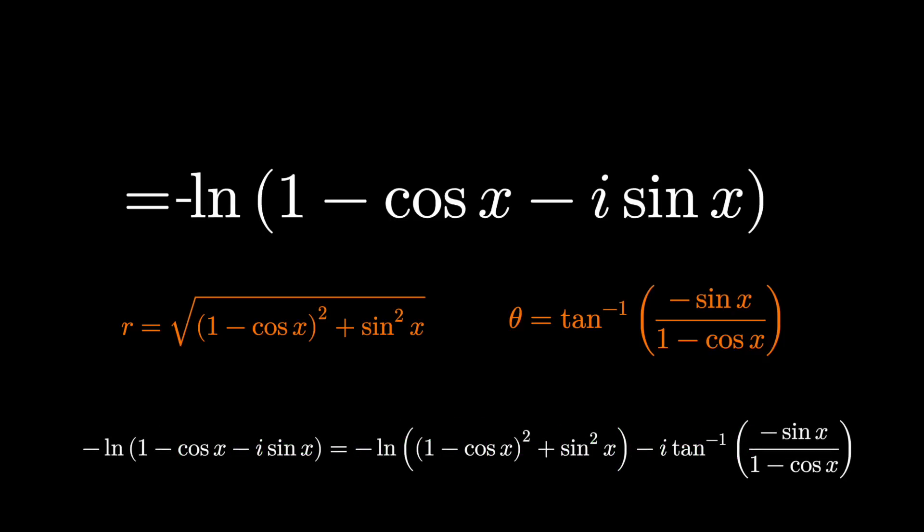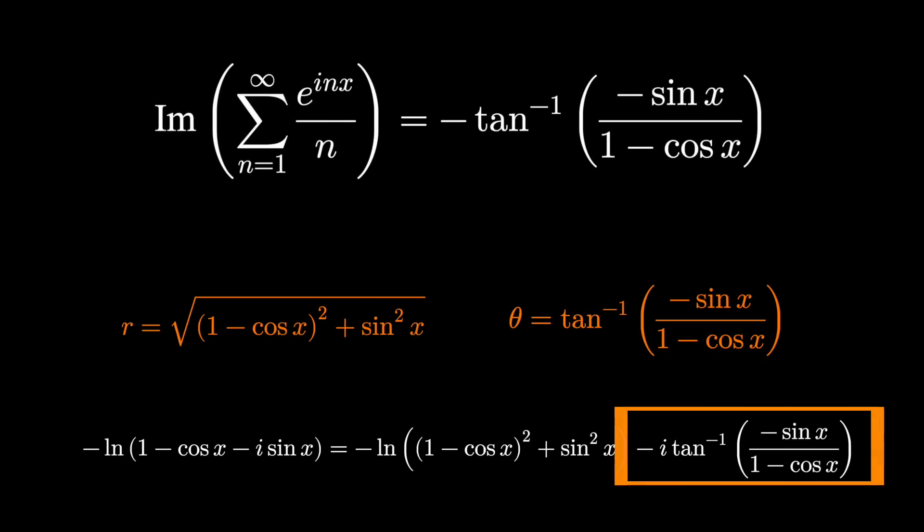This is a pretty lengthy equation. Fortunately, if you recall, we were only concerned with the imaginary part of this. We don't even need to worry about the real part, we're only looking at the imaginary part, which is the inverse tangent of sine x over 1 minus cosine x.